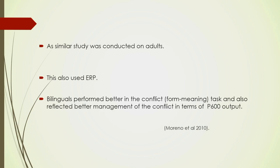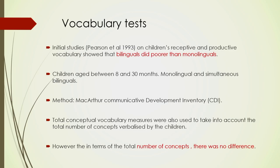Similar studies conducted on adult bilinguals have shown the same kind of results — bilinguals outperform monolinguals. In one study in 2010 that used ERP alongside behavioral measures, bilinguals performed better in conflict tasks and showed better management in terms of brain activity. In terms of P600 output — which we have discussed in processing before — bilinguals showed better ability to control conflict as well, not only in behavioral tasks but also in terms of neural aspects.